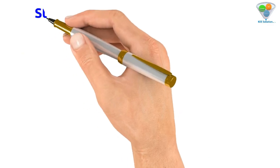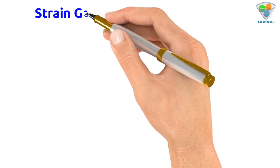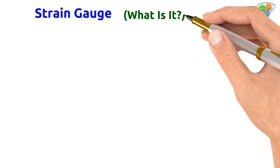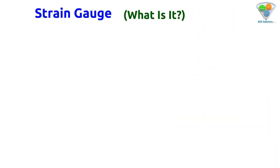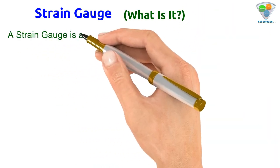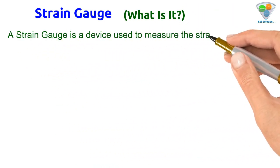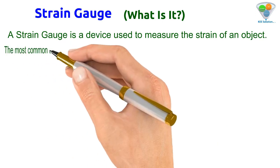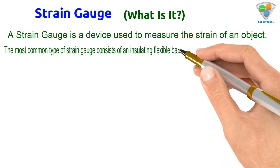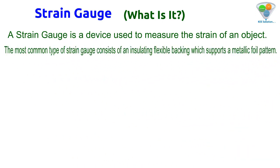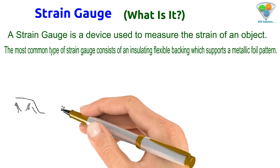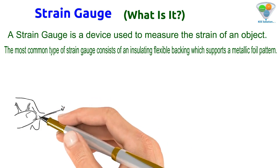The most common type of strain gauge consists of an insulating flexible backing which supports a metallic foil pattern. Here you can see a picture of the strain gauge. It works on a resistive load principle.